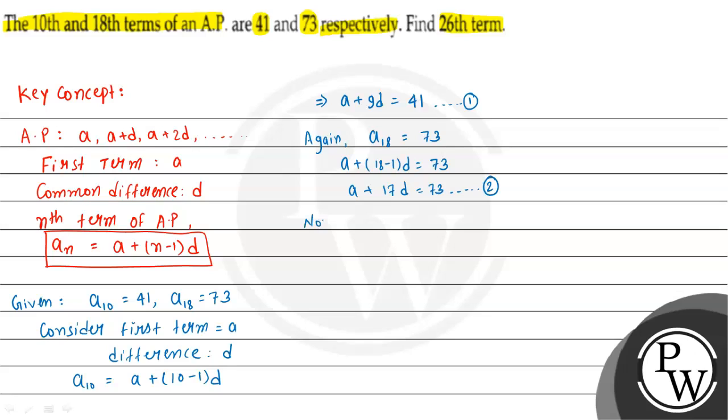Now, subtracting equation 1 from equation 2: a plus 17d equals 73 minus a plus 9d equals 41. The a terms cancel, and 17 minus 9 is 8d. 73 minus 41 gives 32.